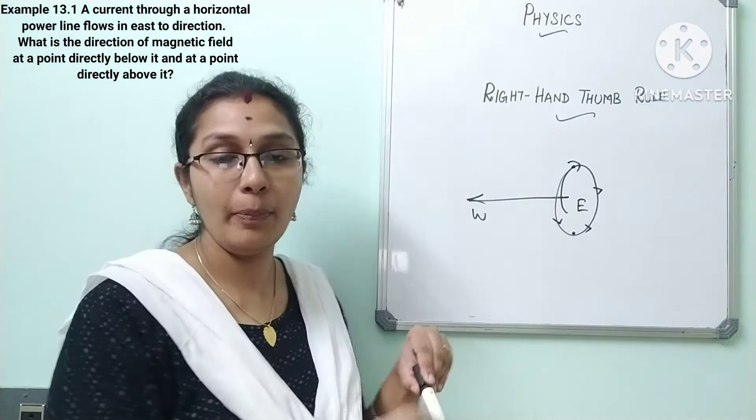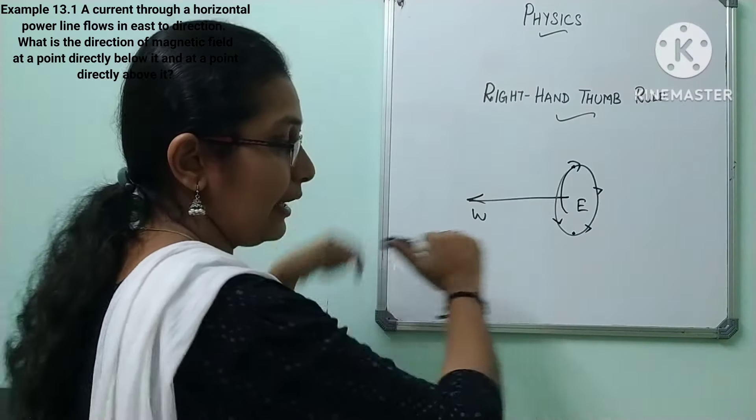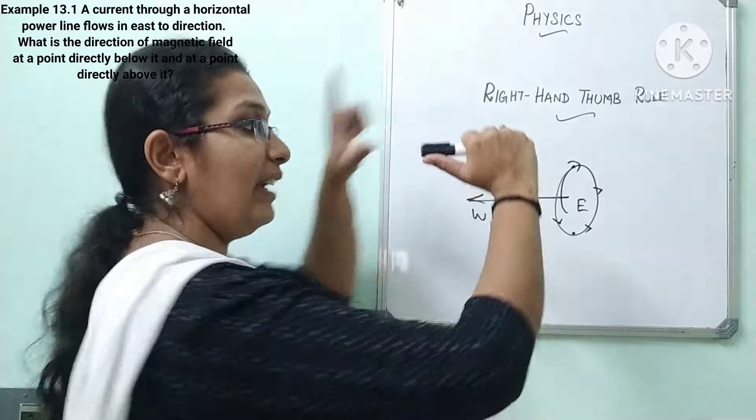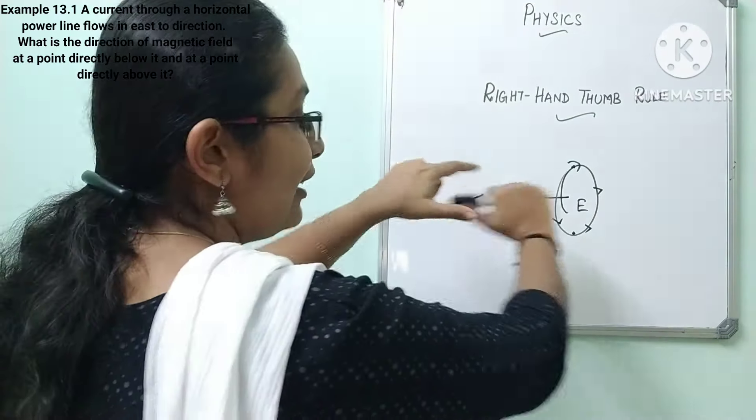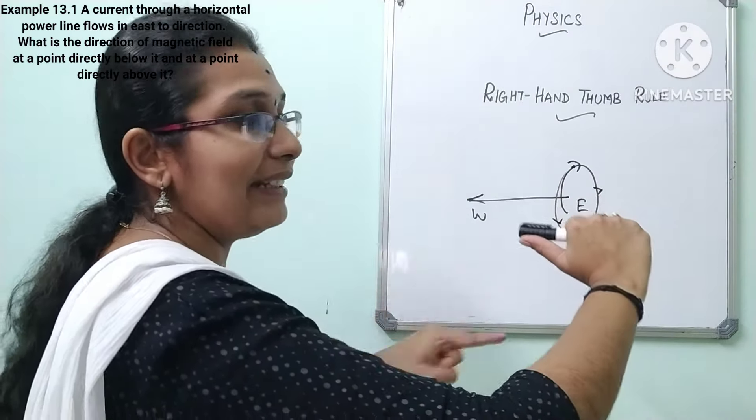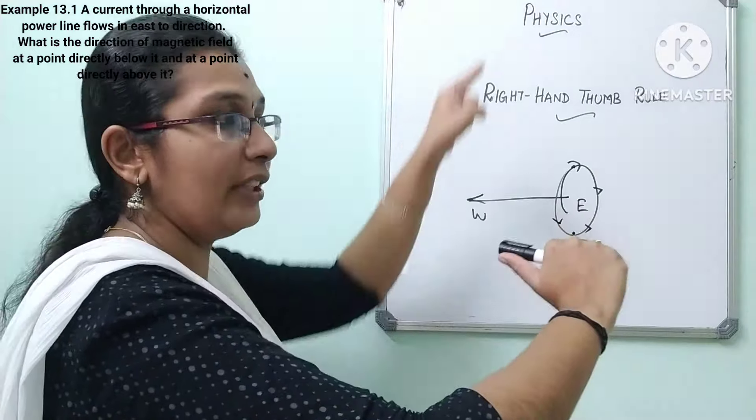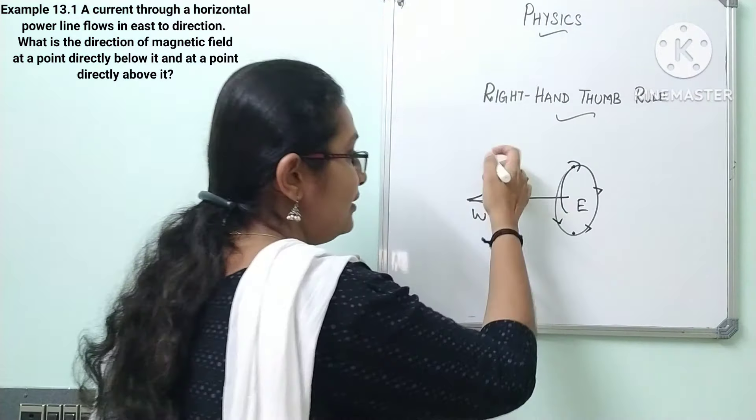So from above point or below point, whichever point you see, it is flowing in clockwise direction. Whereas viewed from west end, that is from this end you are viewing, and now from this end we are viewing, so when viewing from this end it is in anticlockwise direction. You can check it. You can roll your finger and see. So it is in anticlockwise direction.